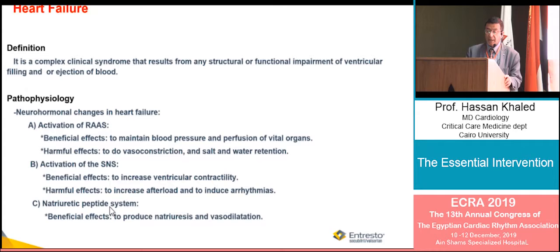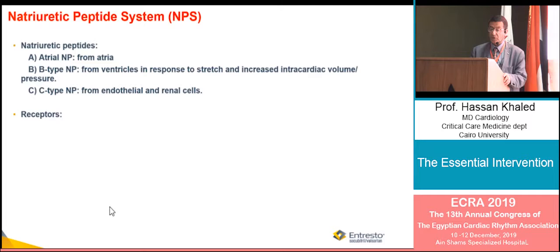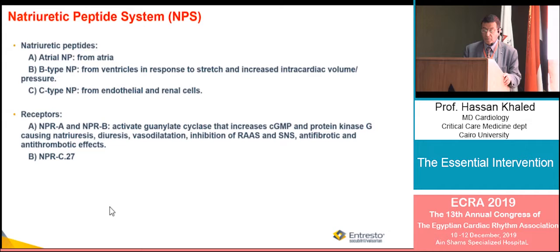The natriuretic peptide system is beneficial. It produces natriuresis and vasodilatation. Atrial natriuretic peptides come from the atrium, and B-type natriuretic peptides come from the ventricle, in response to stretch and increased intracardiac volume. There is also C-type from endothelial and adrenal cells. These receptors activate guanylyl cyclase, increasing cyclic GMP and protein kinase, causing natriuresis, diuresis, vasodilatation, inhibition of RAS and sympathetic activity, and anti-fibrotic effects.